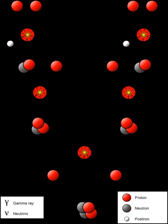In PP-I, helium-4 is produced by fusing two helium-3 nuclei. The PP-2 and PP-3 branches fuse 3He with pre-existing 4He to form beryllium-7, which undergoes further reactions to produce two helium-4 nuclei.